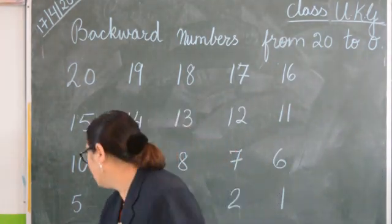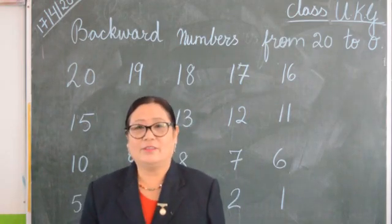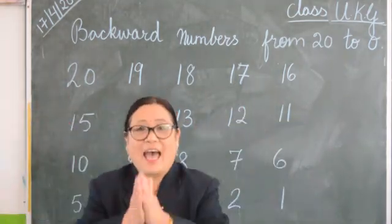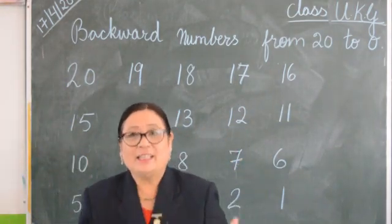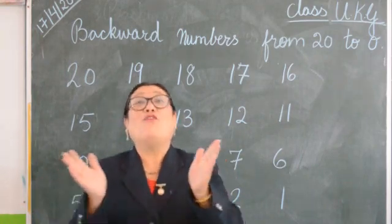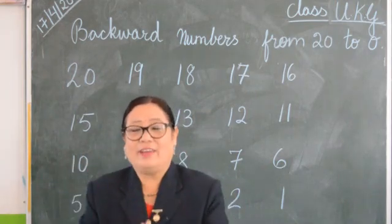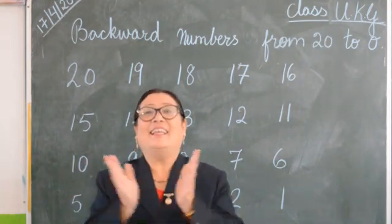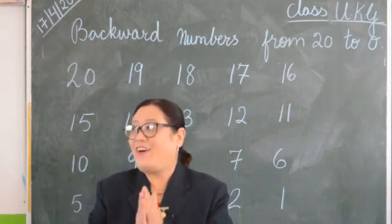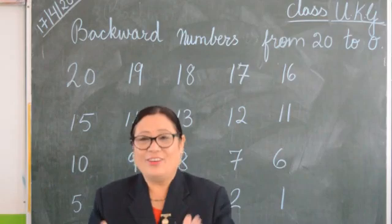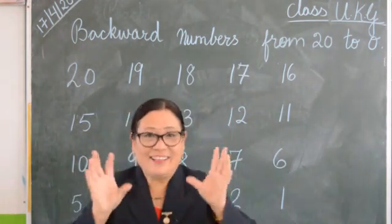Now let's clap our hands and say these backward numbers. Are you ready? Let's say: 20, 19, 18, 17, 16, 15, 14, 13, 12, 11, 10, 9, 8, 7, 6, 5, 4, 3, 2, 1, zero. Zero.